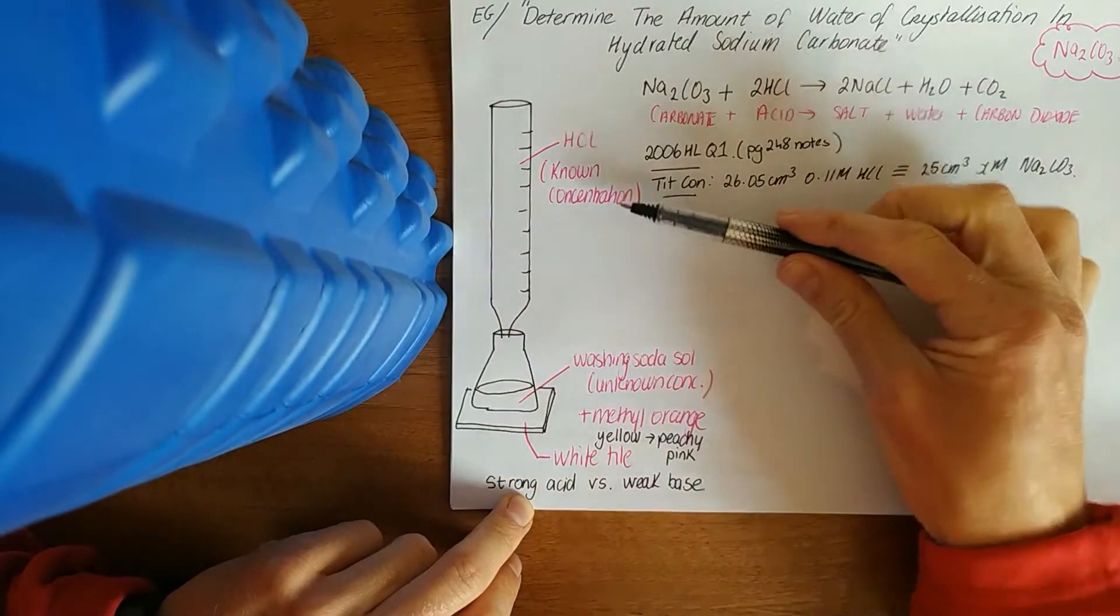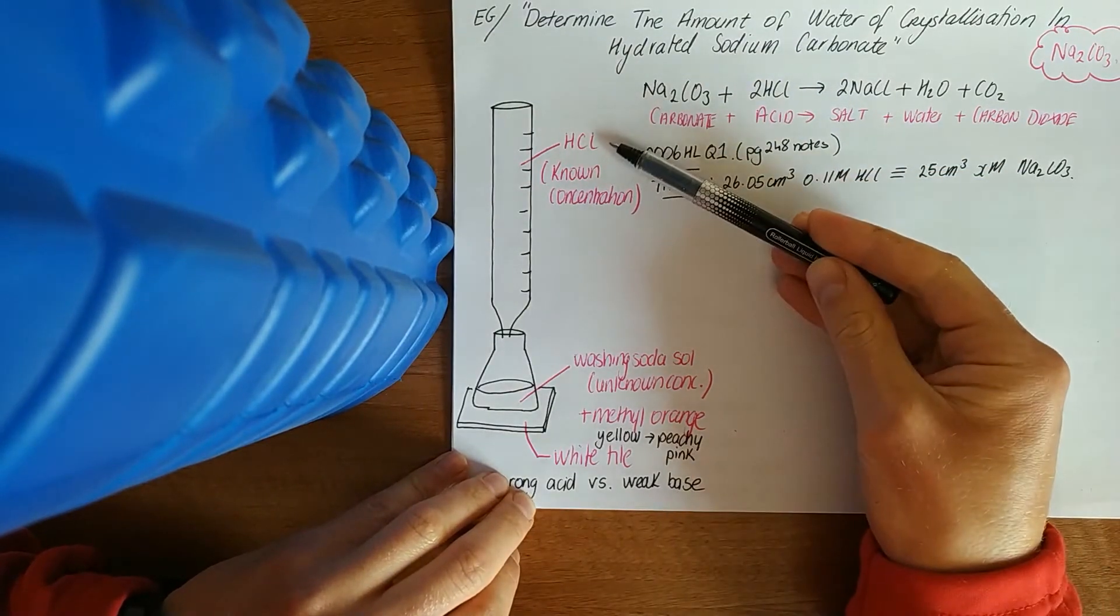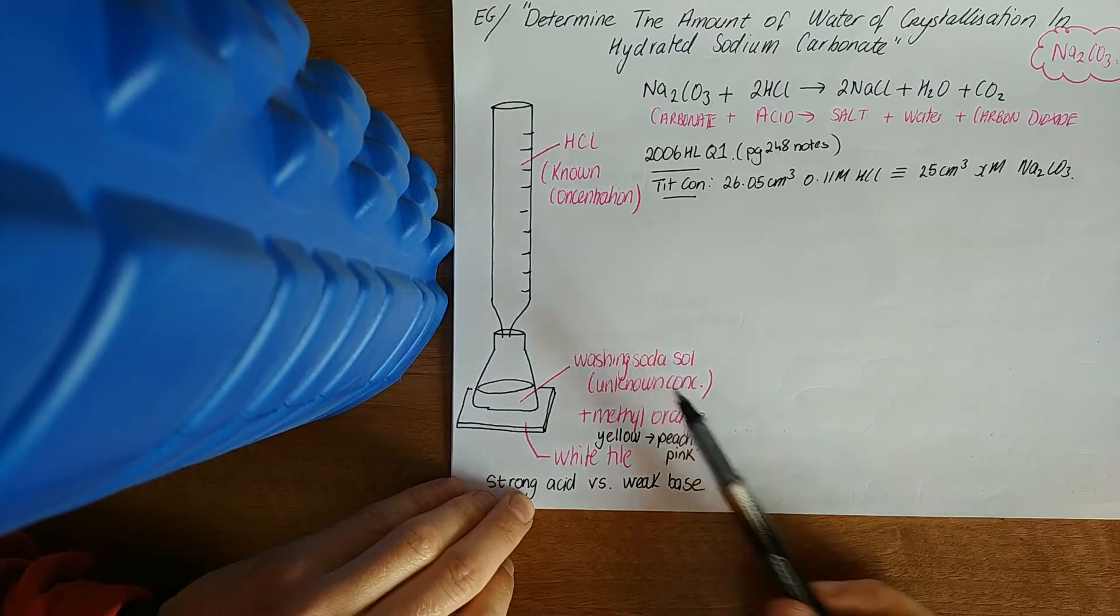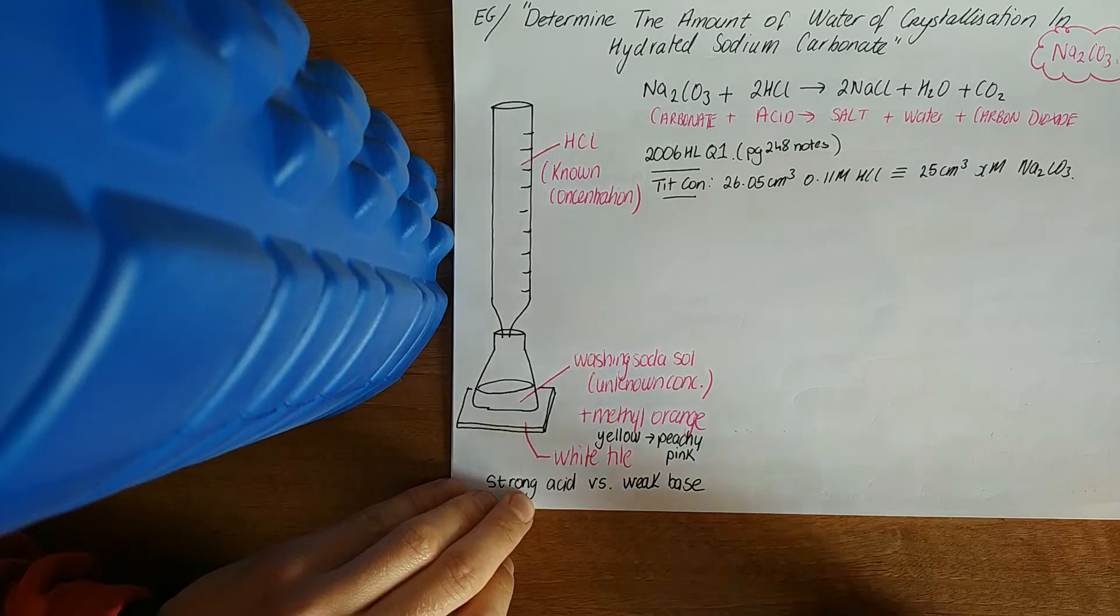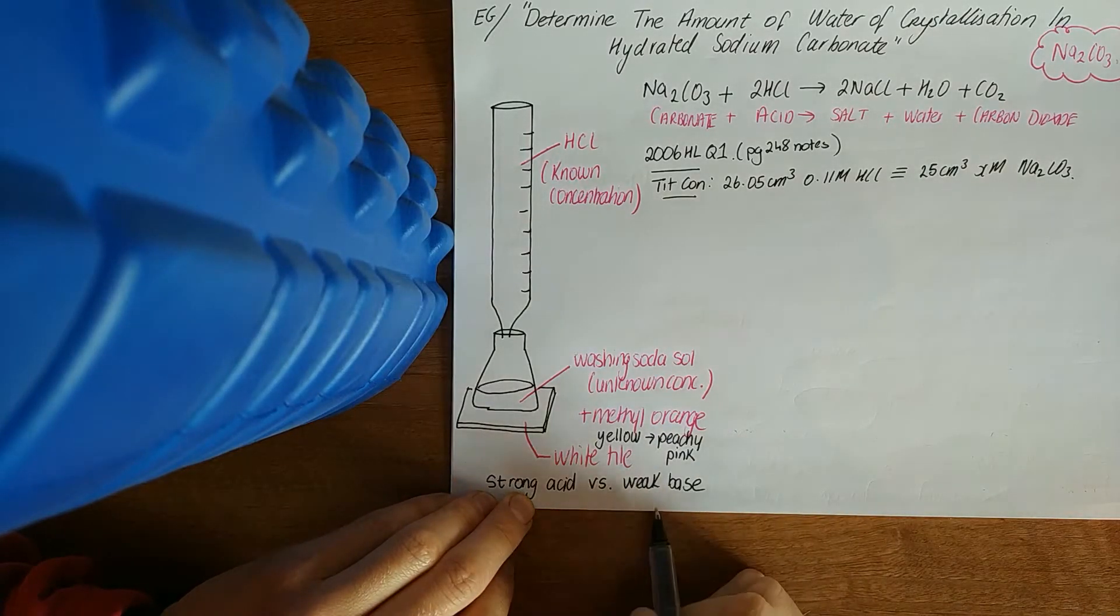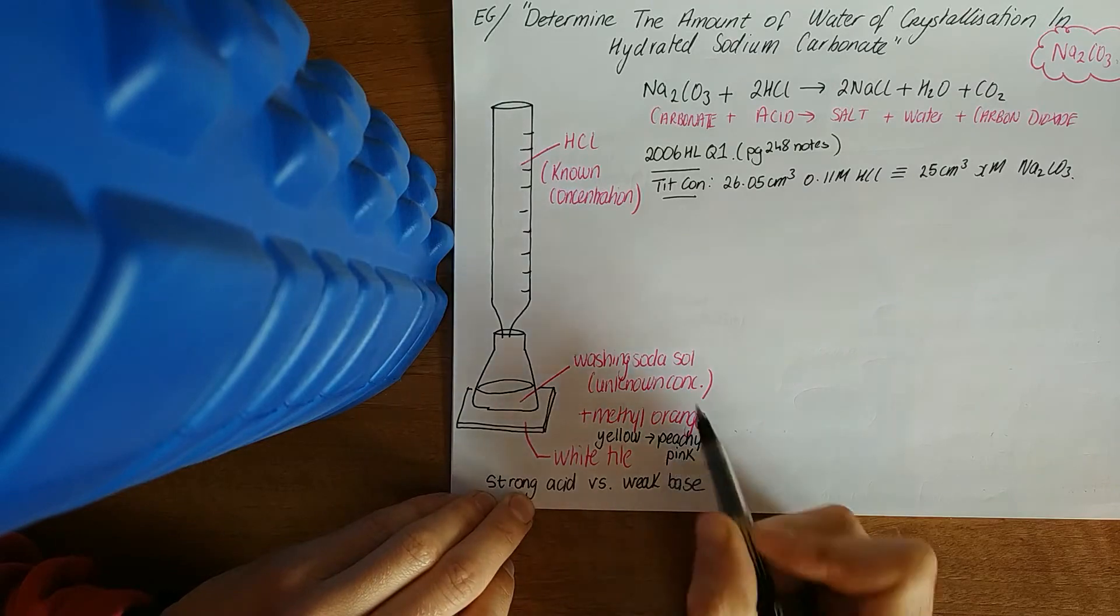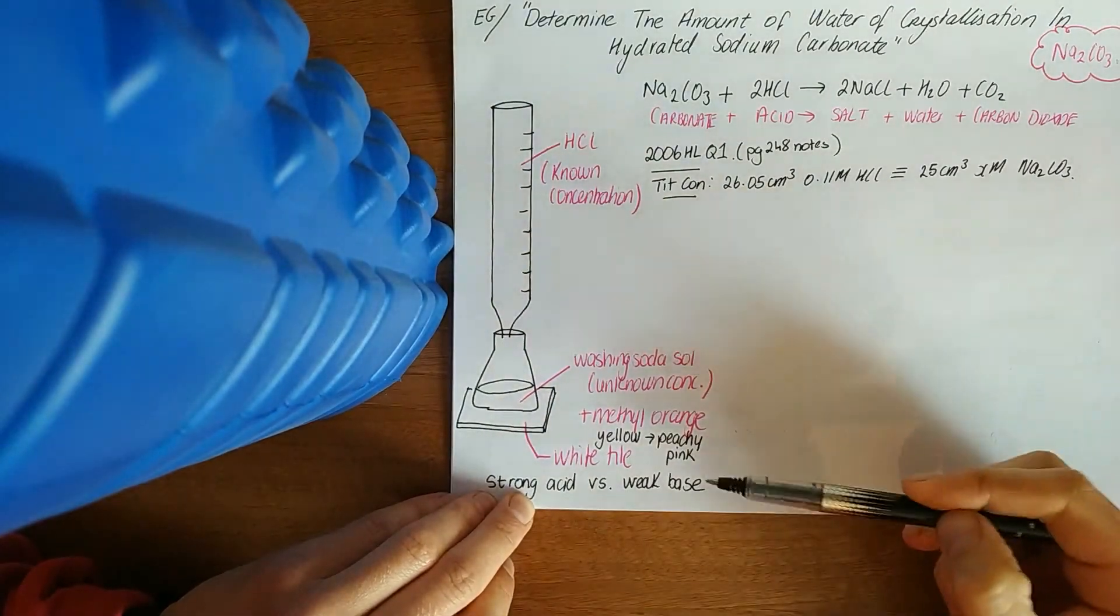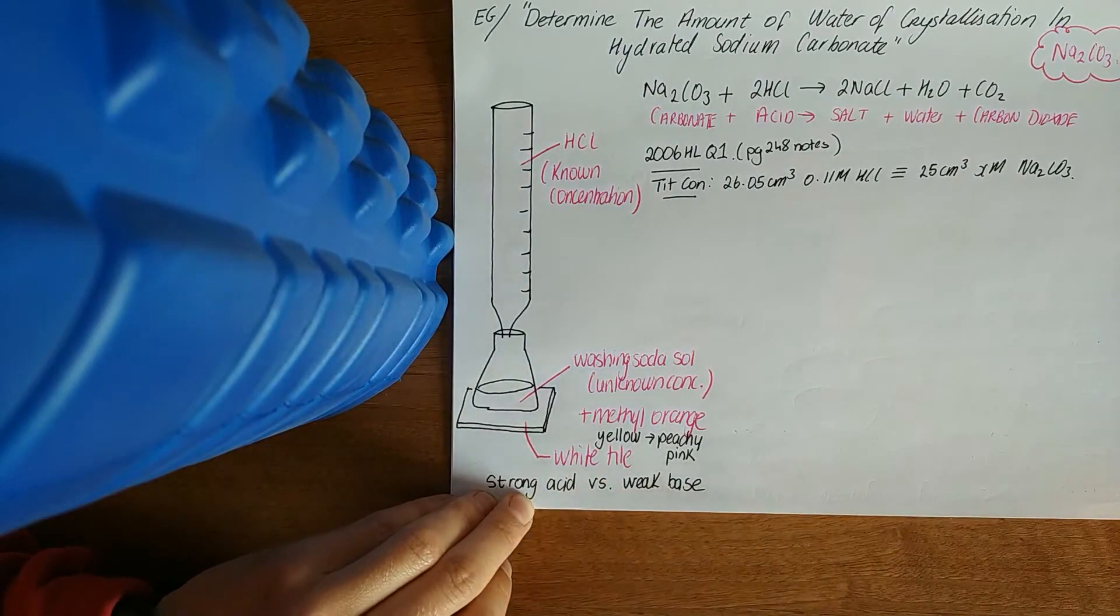We use a standard solution, a solution whose concentration is accurately known of HCl, and we titrate it against this washing soda solution which is made up of sodium carbonate at an unknown concentration. It's yellow to peachy pink. Methyl orange is yellow in the base, and once we add in that one extra drop at the equivalence point, it goes to a peachy pink color.